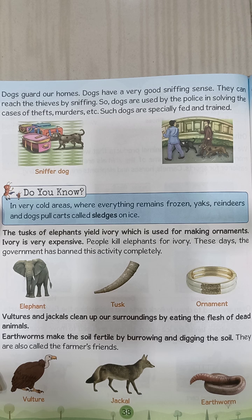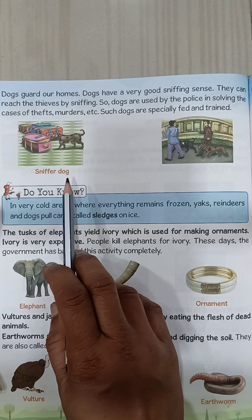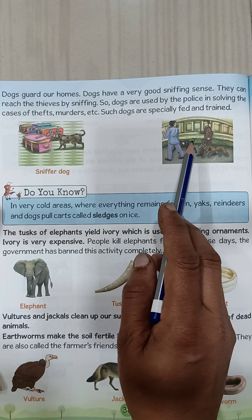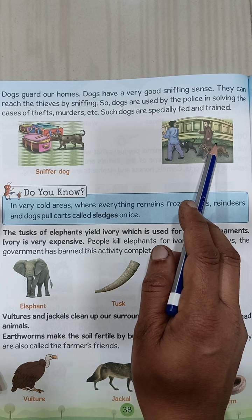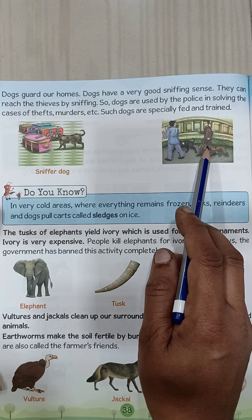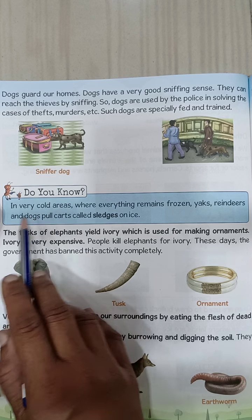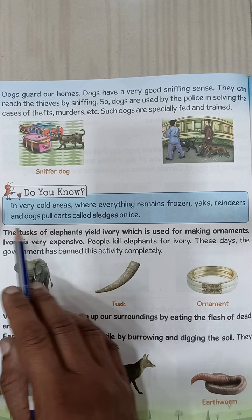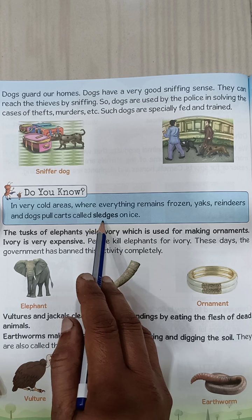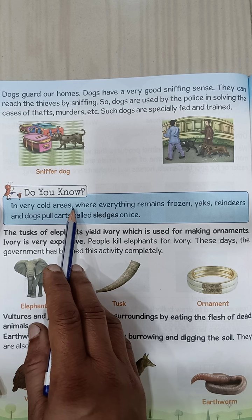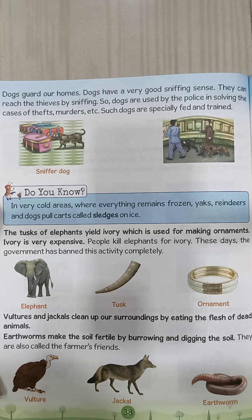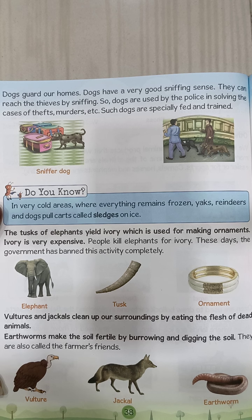Dogs are also useful animals because dogs guard our homes. Dogs have a very good sniffing sense, so police use dogs for solving cases of theft and murder. Such dogs are specially trained. In very cold areas where everything remains frozen, yaks, reindeer, and dogs pull carts called sledges on ice.